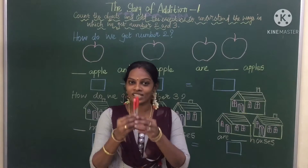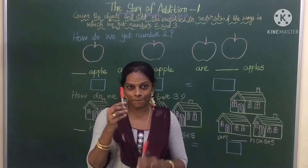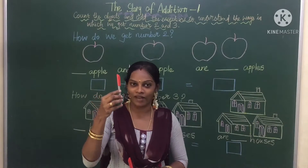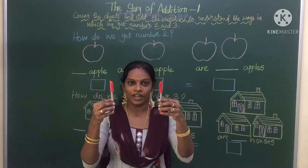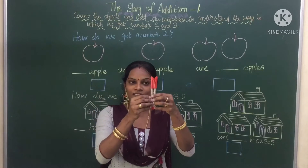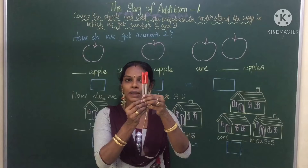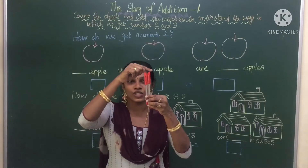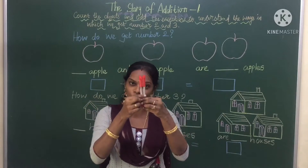Now see, what is this children? This is a pen. In this hand I am having one pen and here I am having one pen. When I bring together, see when I bring together, how many pens does it make? One, two. So it is two pens.